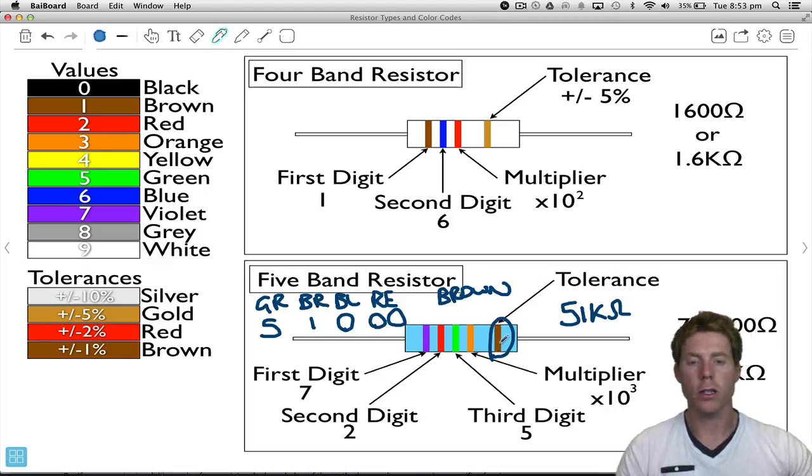Now, the last one, the brown, that's the tolerance. So if we look up brown over here, the tolerance is plus or minus 1%. So this value, in fact, could be 1% above that or 1% below that.